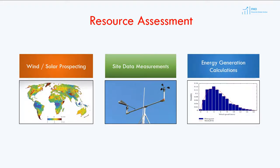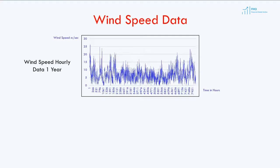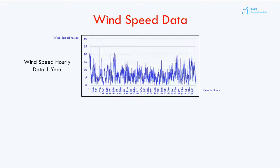Once the wind speed or solar radiation data is obtained, various calculations have to be performed to estimate the future energy production. Here we have an hourly wind measurement data for one year. On the vertical axis, wind speed measured in meters per second is given, and the horizontal axis measures time in hours. Note how volatile wind speed is — it varies from 0 to 26 meters per second.